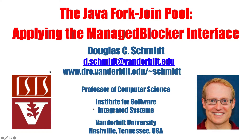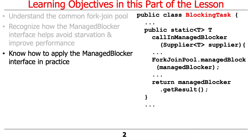Where we left off last time was talking about the managed blocker interface — what it is, which is really simple with just two methods, and how the common fork join pool uses managed blocker to compensate for blocking threads by adding additional threads to the pool dynamically and scaling them back when they're not needed. Now we'll talk about how to apply the managed blocker interface and a helpful little class called BlockingTask that makes it easy to apply.